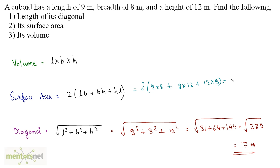So this will be equal to twice of 72 plus 12, 8 is 96 plus 12 times 9 is 108. So this will be equal to 2 times, let's add these up, you get 276. And if that is multiplied by 2, you will get 552. And this will be in meters squared because that's the area.